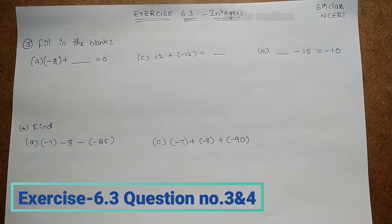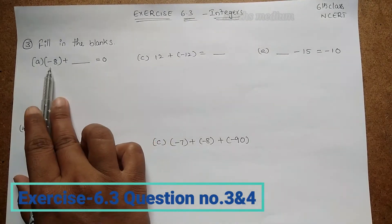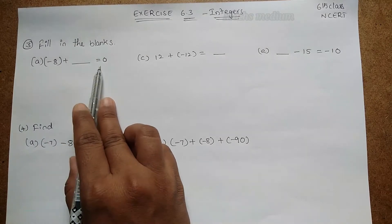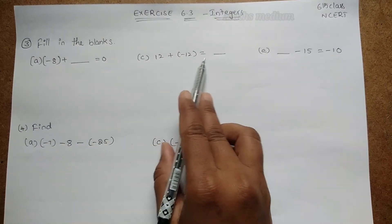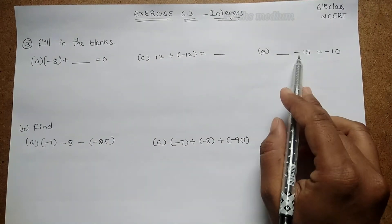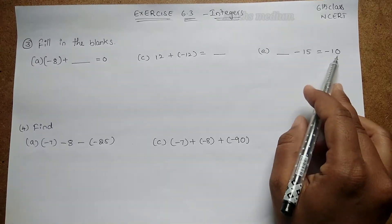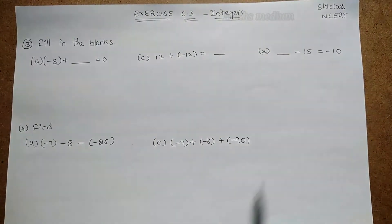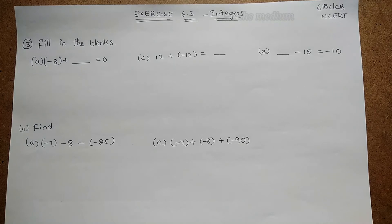Hi, hello, welcome to Maths Medium. Today I came with Exercise 6.3 from Integers, Class 6 NCERT, Question 3: Fill in the blanks. Problem (a): -8 + ___ = 0. Problem (b): 12 + (-2) = ___. Problem (e): ___ - 15 = -10. So we have to fill in these blanks with the appropriate values.